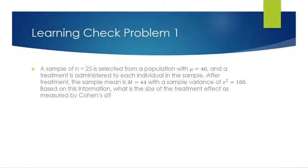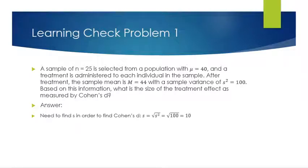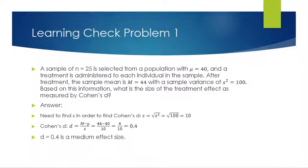Learning check problem 1: a sample of n equals 25 is selected from a population with a mean of 40 and a treatment is administered. After treatment, the sample mean is 44 with a sample variance of 100. What is the size of the treatment effect as measured by Cohen's d? First find s: the square root of s squared equals the square root of 100, which is 10. Then Cohen's d equals m minus mu over s: 44 minus 40 over 10 gives 0.4 — about a medium effect size.